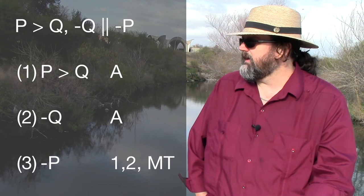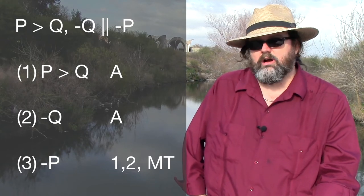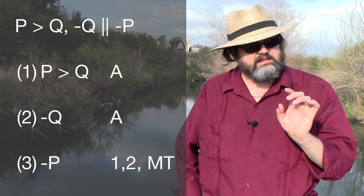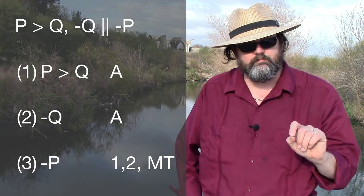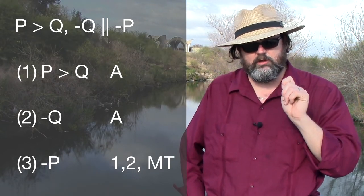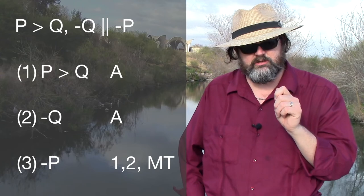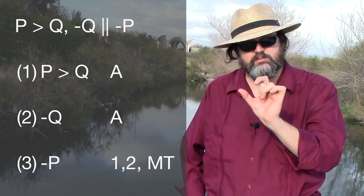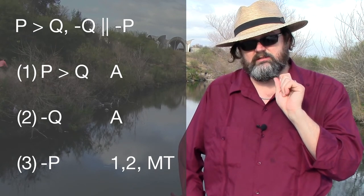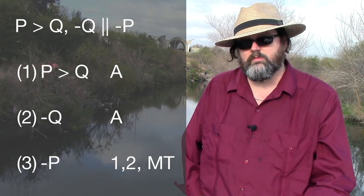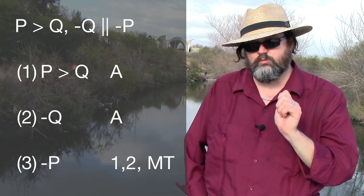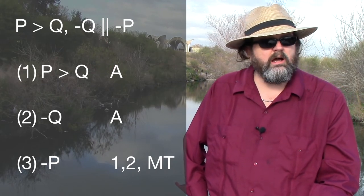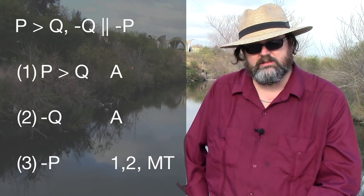Line three is where we make our inference of negation of p. We provide the citation: we made this inference from lines one and two — one comma two comma — then a space between the last comma and the rule used. We abbreviate modus tollens as MT.